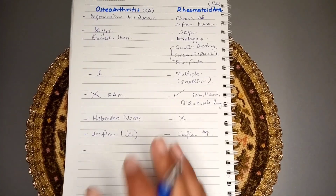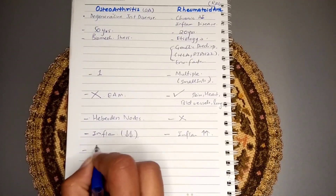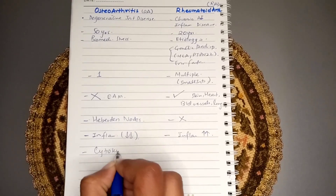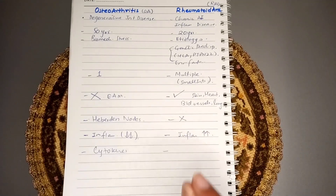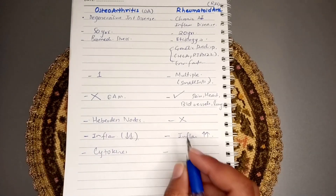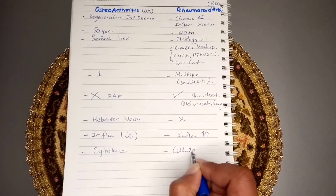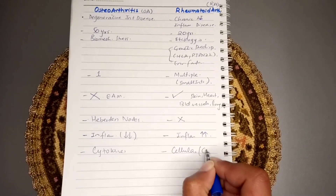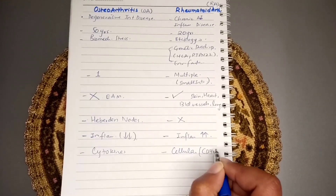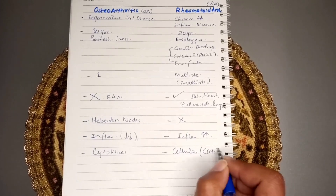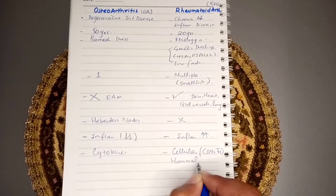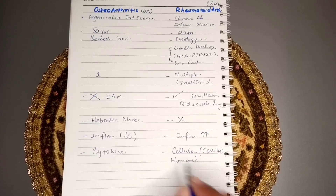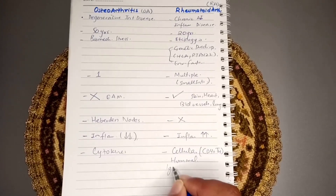In rheumatoid arthritis, the cellular and humoral immune responses are responsible for the disease. In the cellular response, CD4 T cells — the helper cells — play a major role. In the humoral response, antibodies such as IgM and IgA are involved.